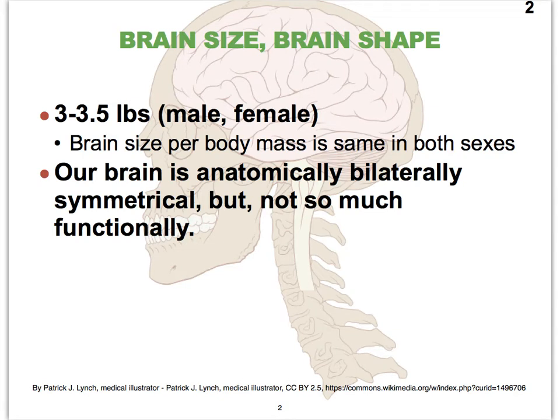Before we look at how our brain develops, let's discuss some general information and ensure that all of us are correct about how we think about our brain, particularly with regards to the size of our brain. The male and female brain size is about three to three and a half pounds, and there's really not much of a difference. The difference lies in the change in body mass between a male and a female.